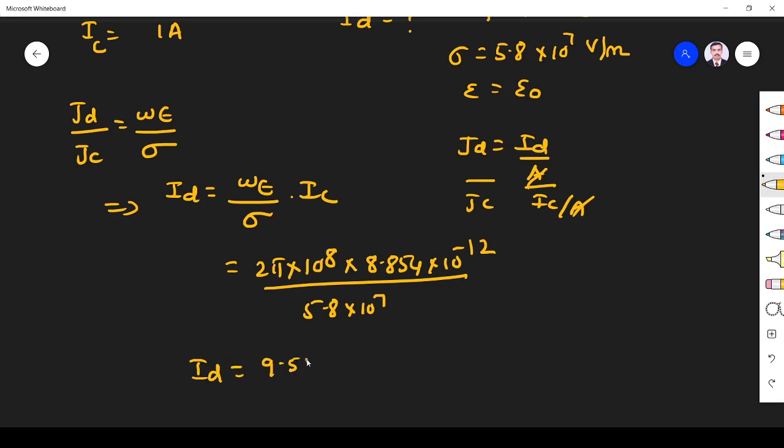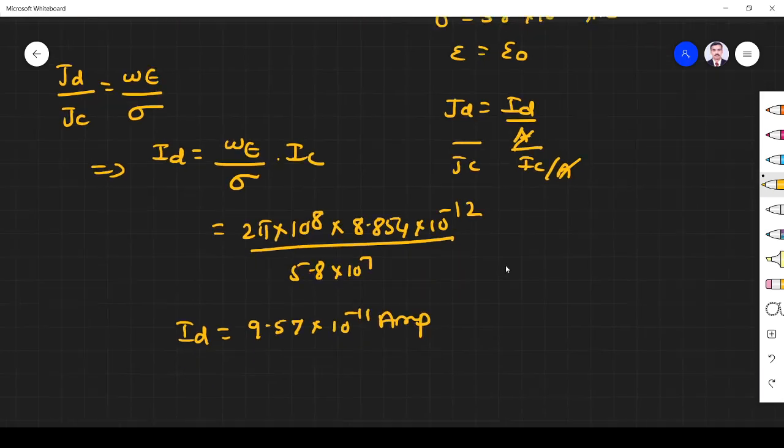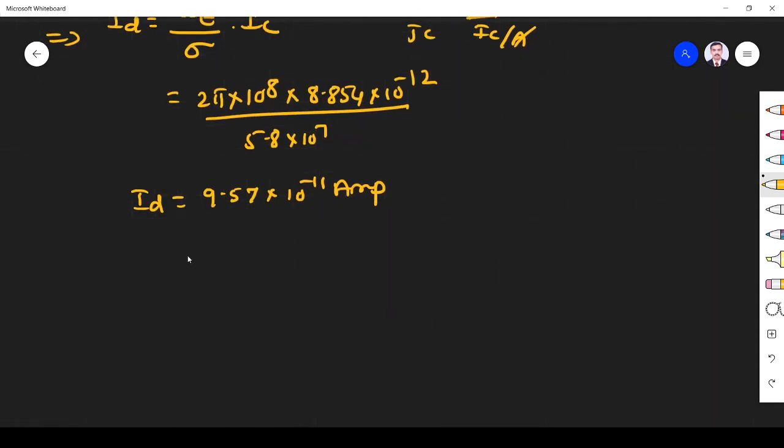Id is 9.57×10^-11 amperes. This is the displacement current.